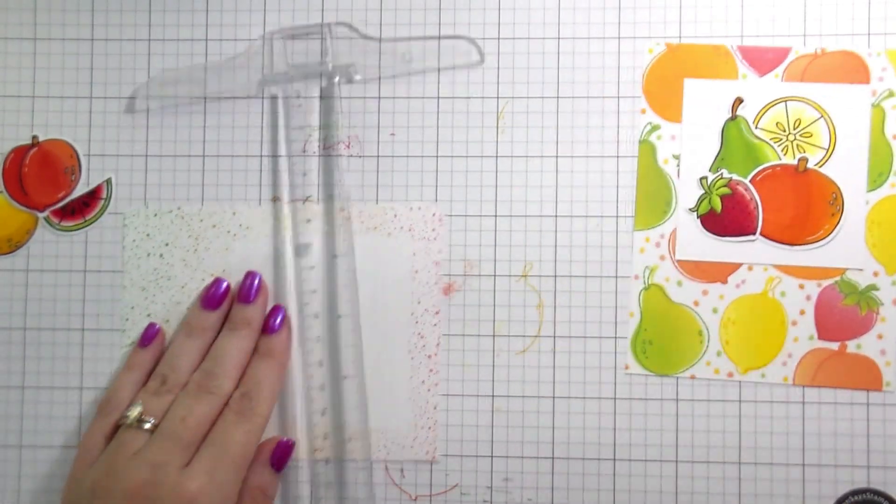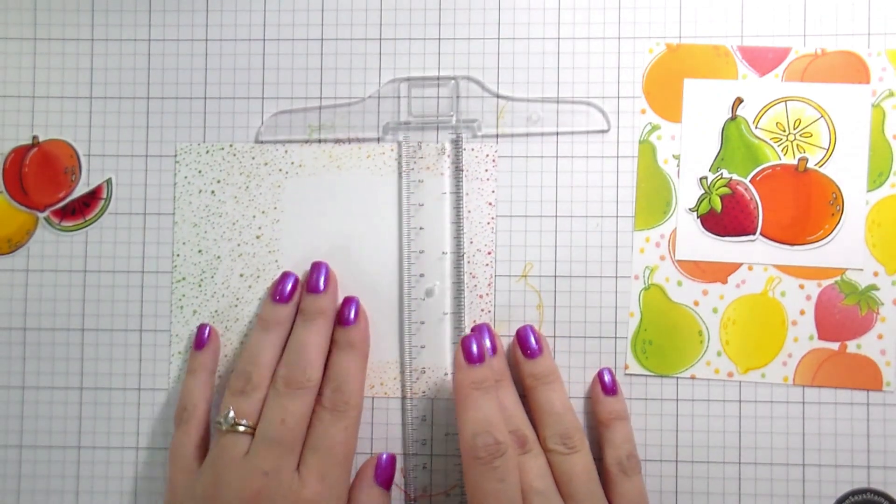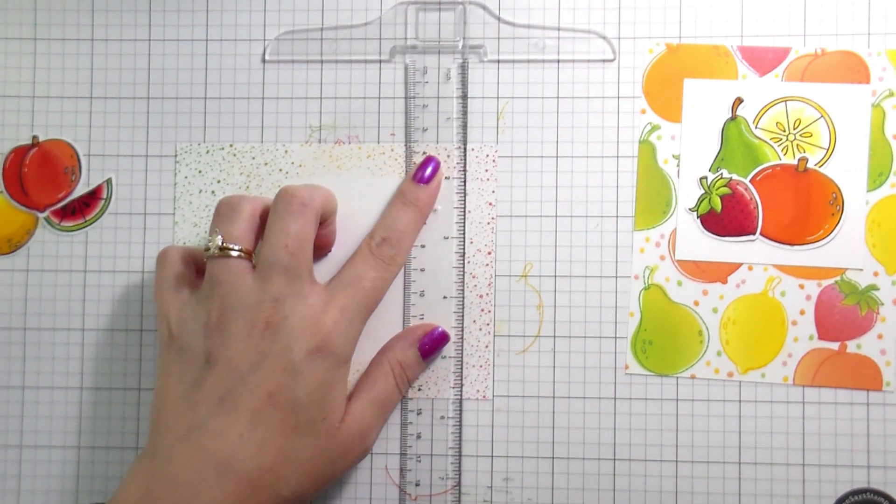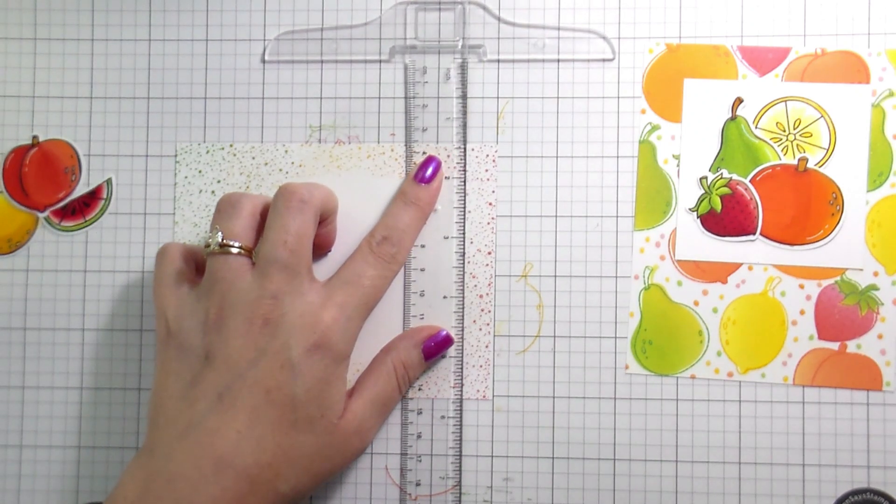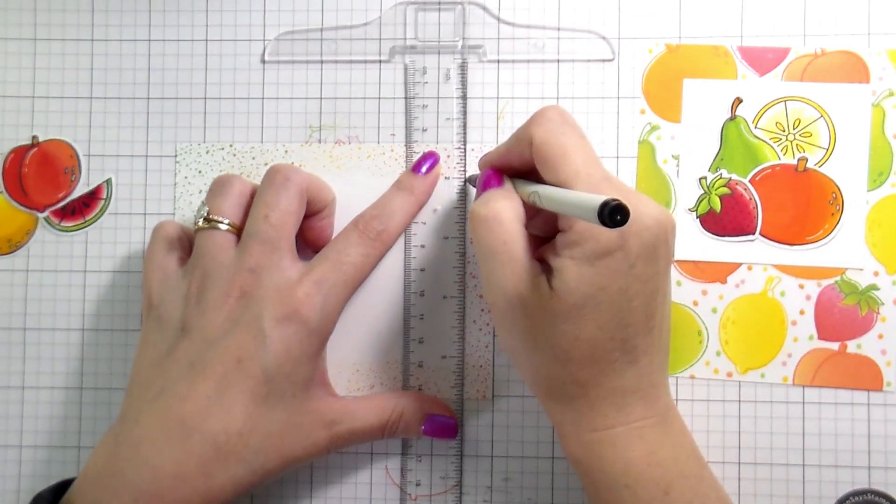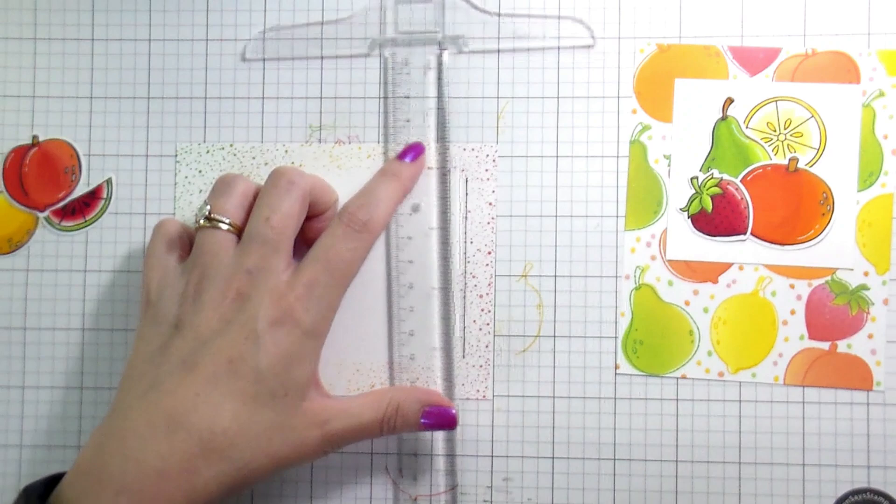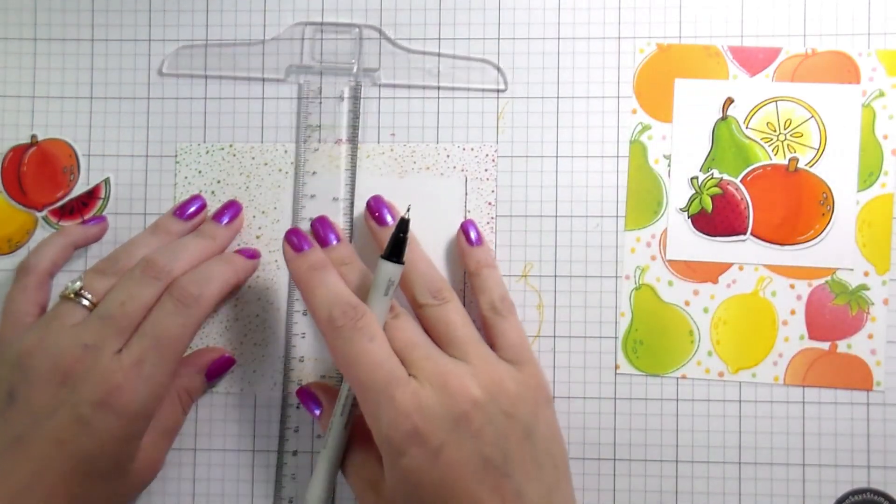For this rainbow confetti background, I really like to have things framed out. You don't have to do this, this is just a me thing. So I'm using a T-square ruler and my EK success journaling pen to just draw a frame around this. I can't help it. I like to have things look a certain way. That was on Tuesday. On Wednesday, I started to feel a little bit better, still not a hundred percent, but a little bit better.